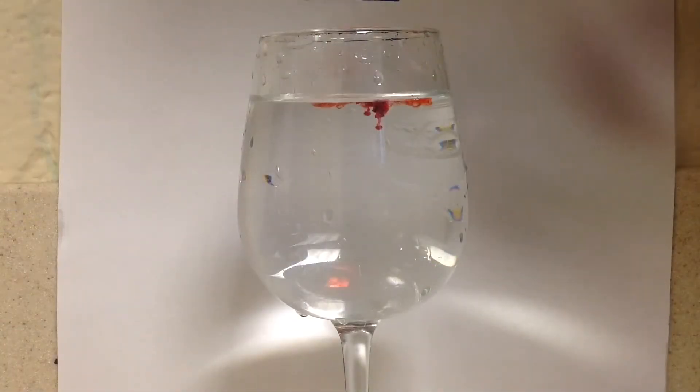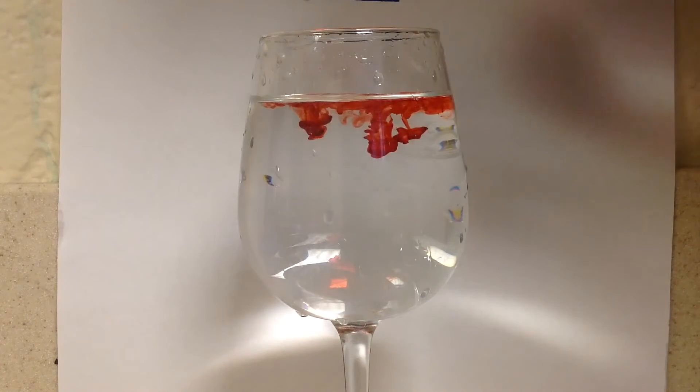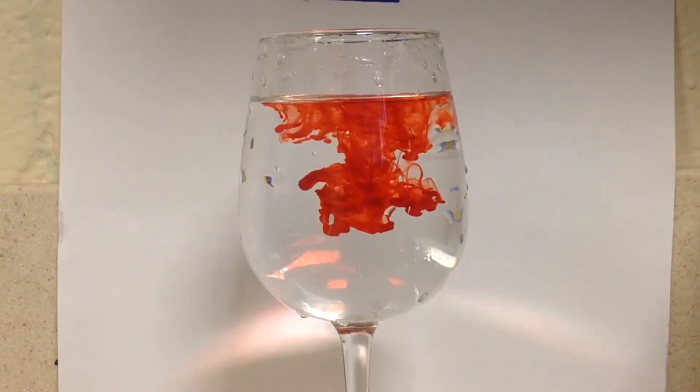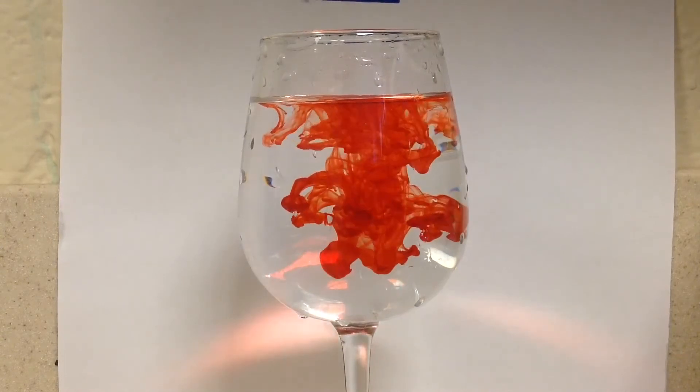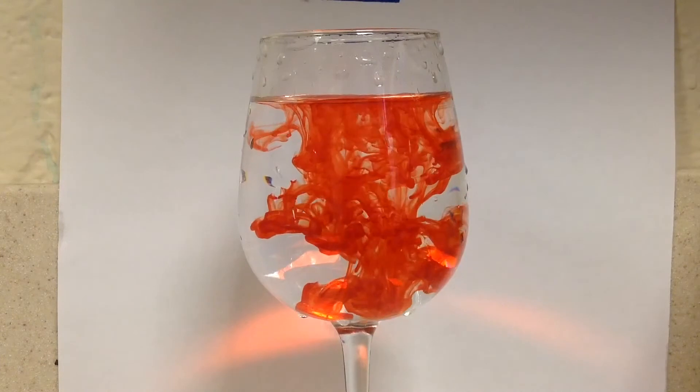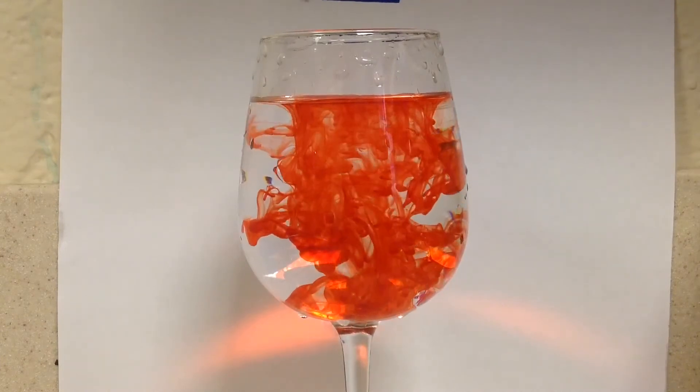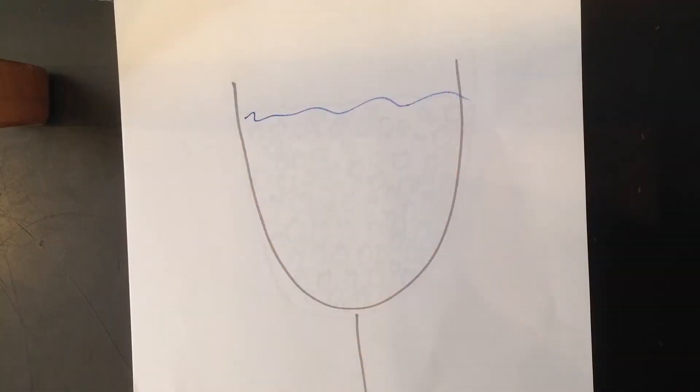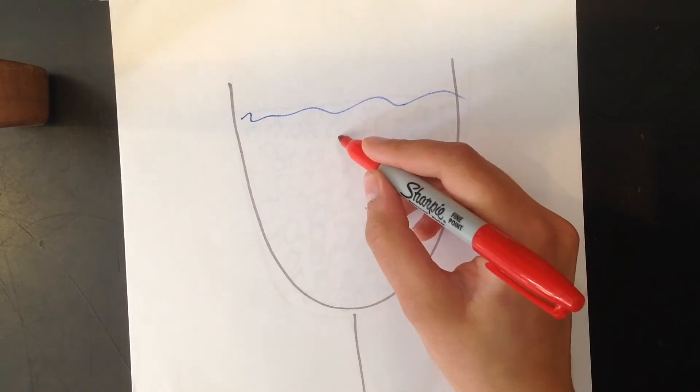A common example of Brownian motion is dropping dye into a glass of water. As you can see, the red dye particles are interacting and colliding with the water molecules. And although this process looks relatively slow, the collisions are happening very rapidly. So if we didn't know about the concept of Brownian motion, we would expect the red dye particles to just fall straight down.